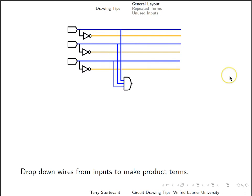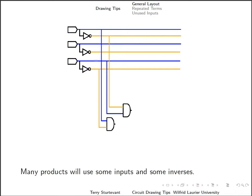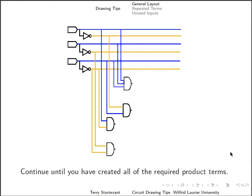So then to make a product term, we can drop down wires from each of these inputs into an AND gate. If we need inverses, then again we can drop down from the inverses as well. A lot of products will contain some inputs and their inverses as well. So, keep doing this until you've created all of the required product terms.